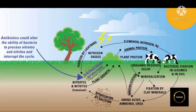Once nitrogen is converted into these usable compounds, it can be utilized by plants from the soil through their root system. Nitrogen is then used for the synthesis of plant proteins and other compounds. Animals feeding on plants get these proteins and other nitrogen compounds.